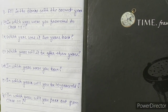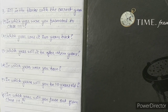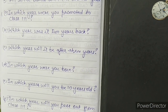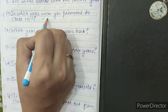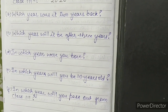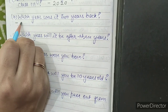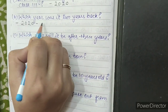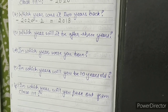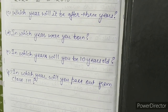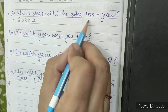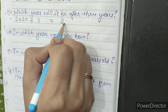Question number 3. Fill in the blanks with the correct year. A. In which year were you promoted to class 3? Answer: 2020. B. Which year was it 2 years back? Present year is 2020 minus 2 equals 2018. C. Which year will it be after 3 years? 2020 plus 3 equals 2023.